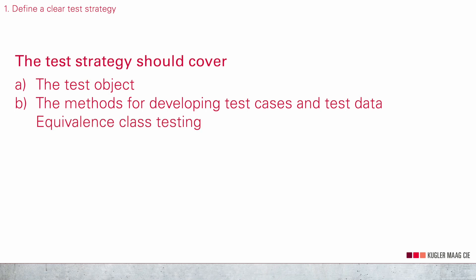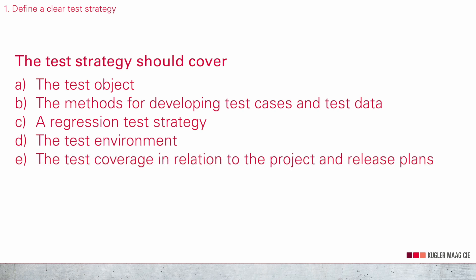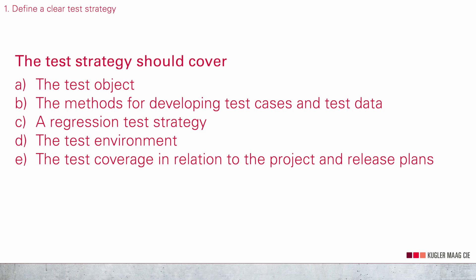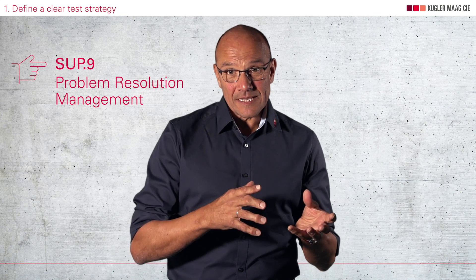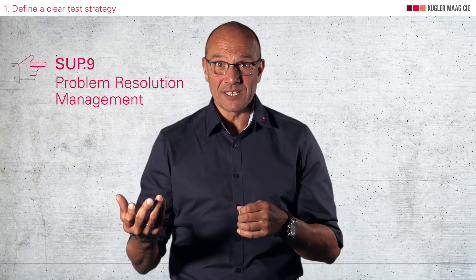The test strategy should cover the following topics: the test object in question; the methods for developing test cases and test data, like for instance development of positive and negative test cases, equivalence class testing, boundary value testing; a regression test strategy — which in Automotive SPICE terminology means that you define how you want to retest after a bug fix or a change request; the test environment; and test coverage in relation to the project plan and the release plan; and last but not least, entry and exit criteria and test interruption criteria. This process has a very strong relationship to sub 9 problem resolution management, so you can use either the test strategy or the problem resolution management strategy to document how to deal with failed tests.